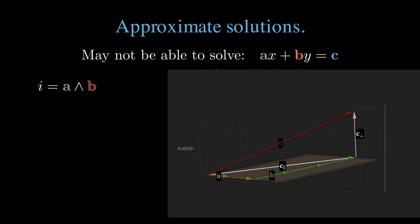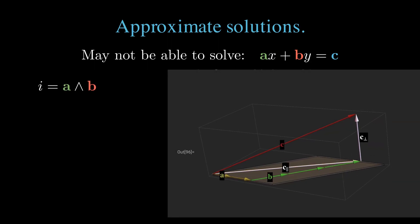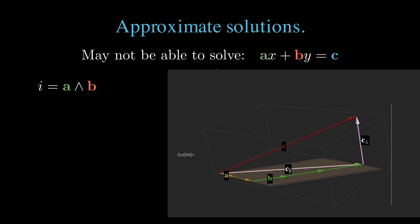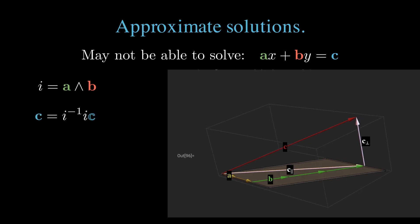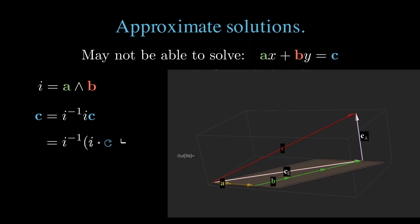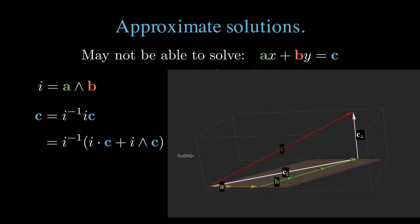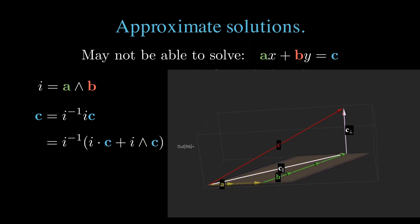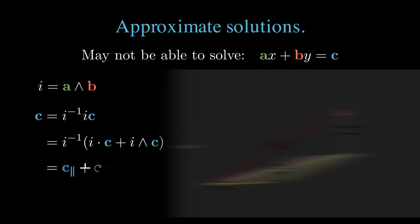We may not be able to solve an arbitrary second degree equation, ax plus by equals c. However, if we decompose our vector c into portions that are parallel and perpendicular to the plane by writing c equals i inverse i times c, and then expanding i times c as i dotted with c plus i wedge c, we resolve the parallel and perpendicular components of c. We can always solve the projection problem, ax plus by equals c parallel.